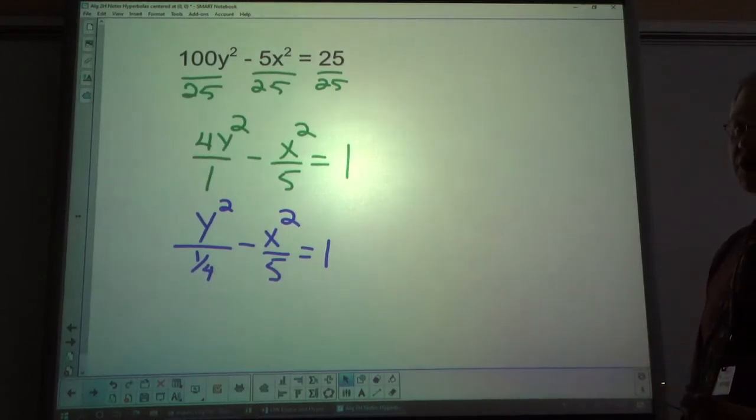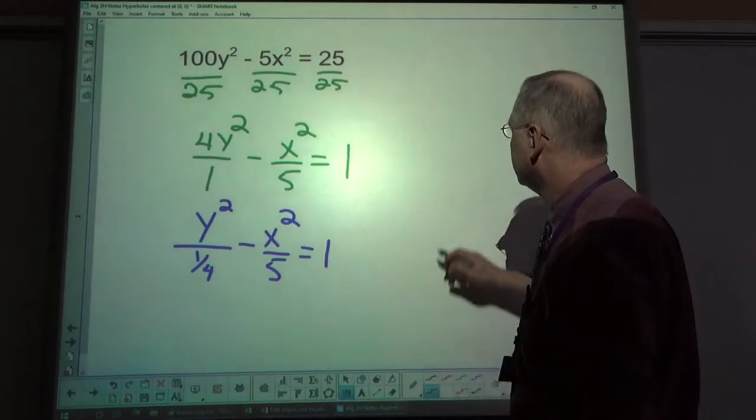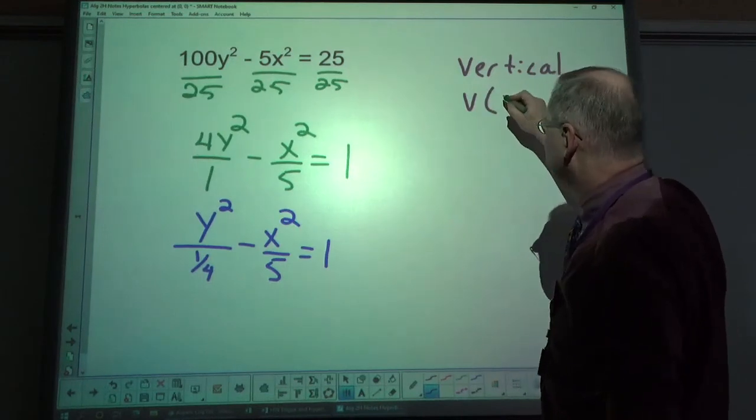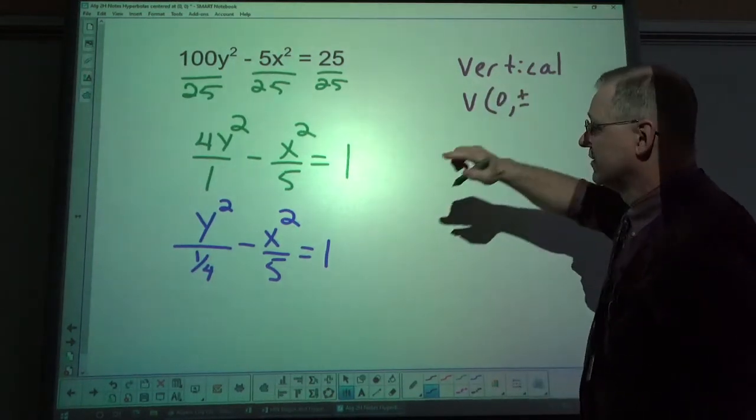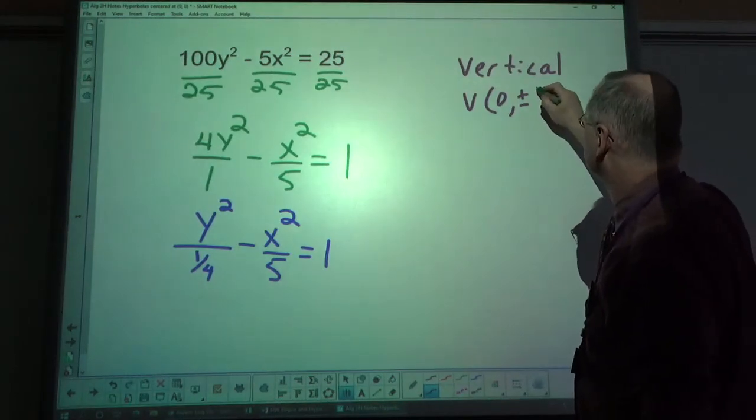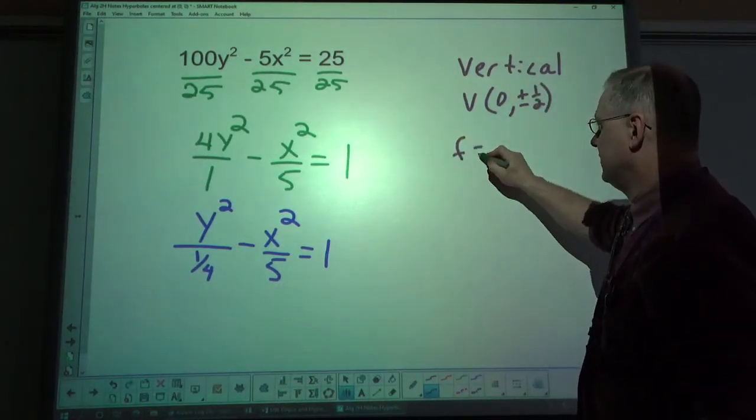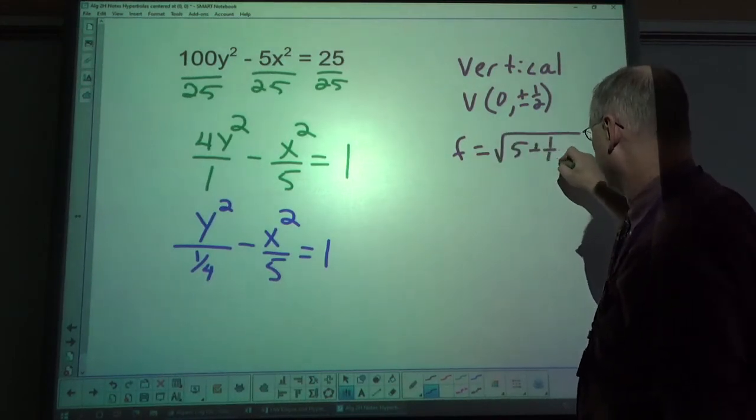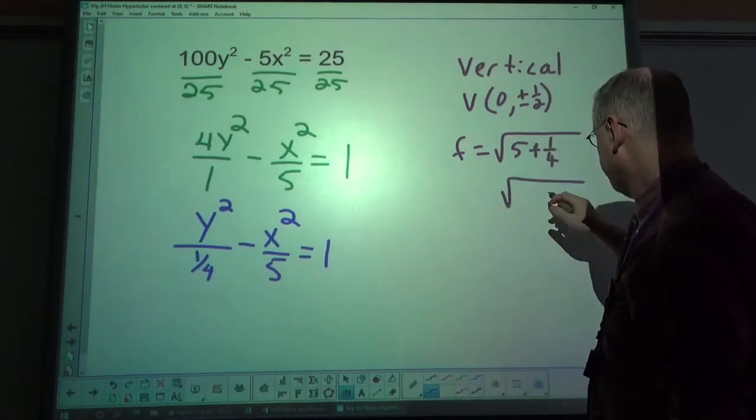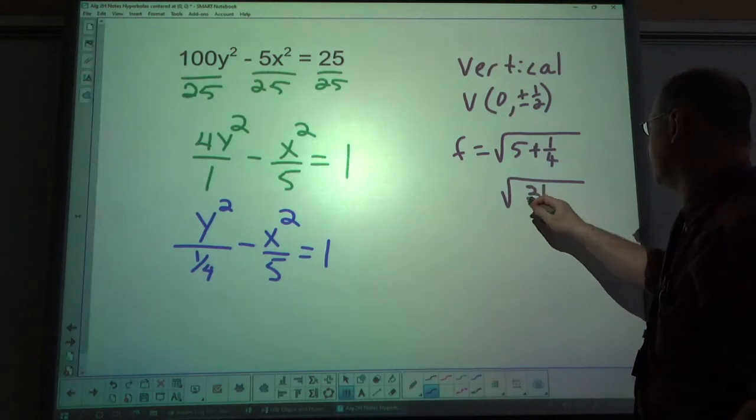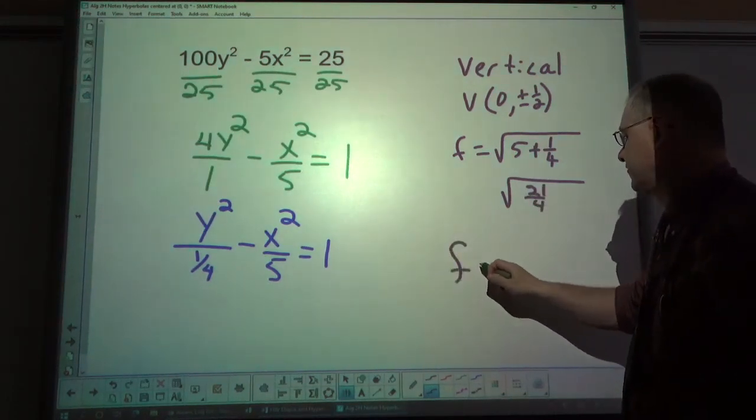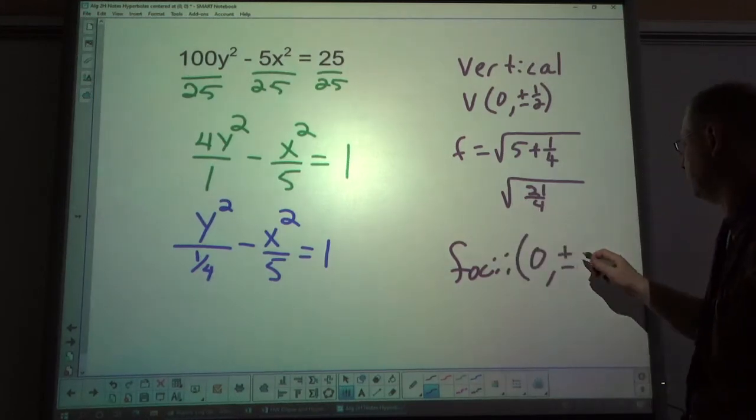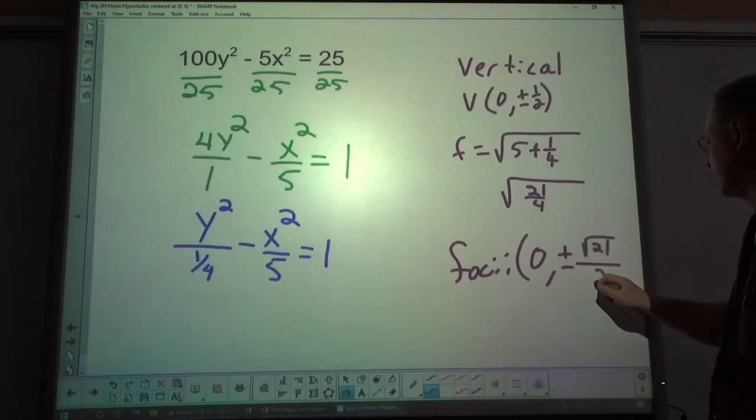So, now I have my standard form. And if you wanted to, you could go through the process of finding all the basic information, like vertical, vertices at 0 plus minus, now the square root of 1 fourth is 1 half. F is not so nice, square root of 5 plus 1 fourth or 21 over 4. So, foci is going to be 0 comma plus minus. If I simplify, I get square root of 21 on top and the number 2 on bottom.